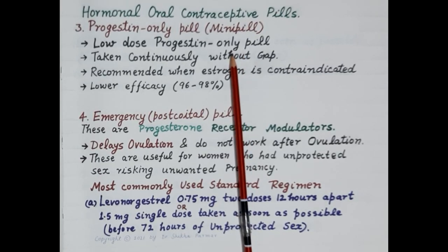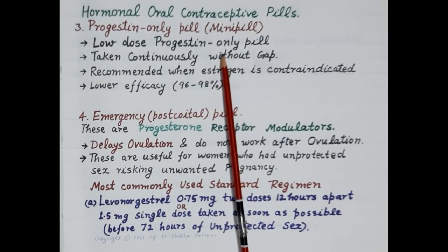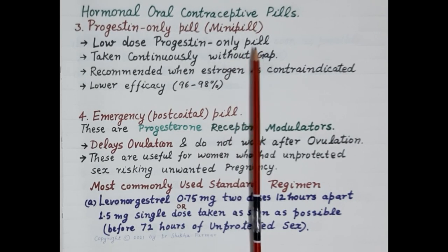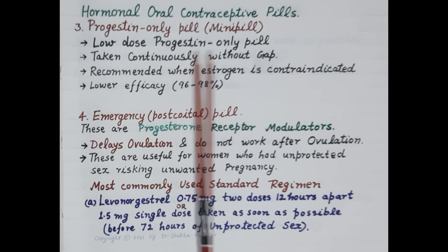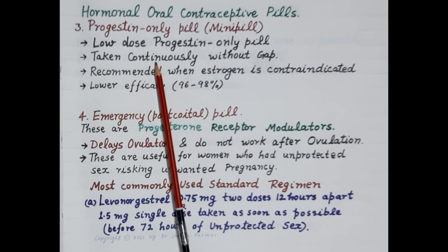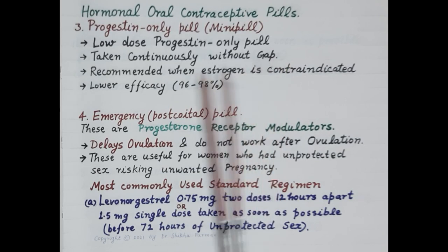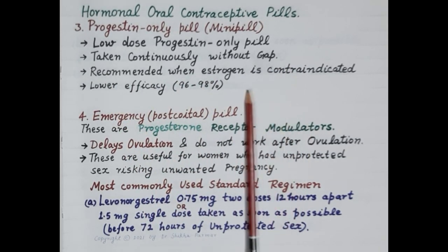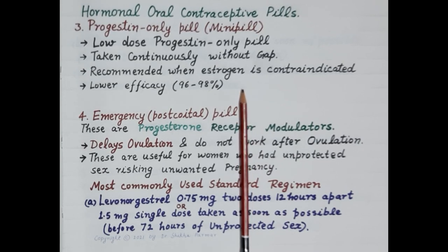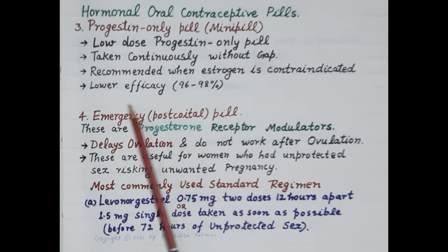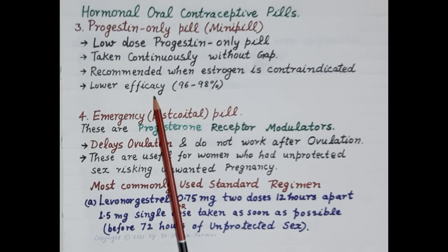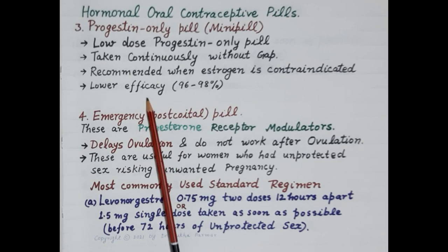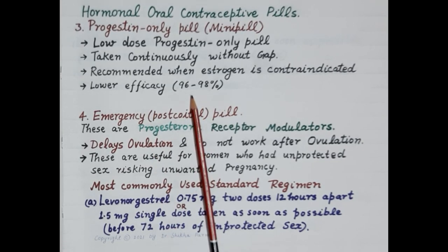The third type are progestin-only pills, called mini pills. These contain only progesterone and are taken continuously without any gap. They are recommended when estrogen is contraindicated. Mini pills exhibit lower efficacy compared to the combined pills, with efficacy of 96 to 98 percent.